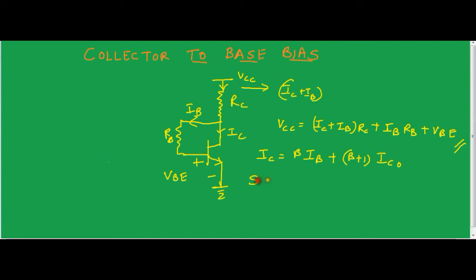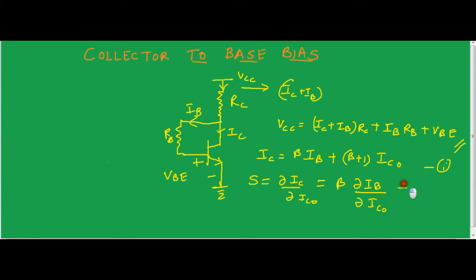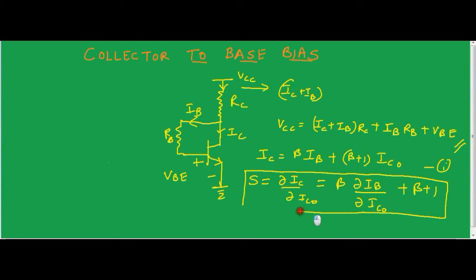We all know that stability factor S is delta IC upon delta ICO. Differentiating with respect to ICO, we get S equal to beta times (delta IB upon delta ICO) plus (beta plus 1). This is the stability factor — the general equation that applies for all configurations.